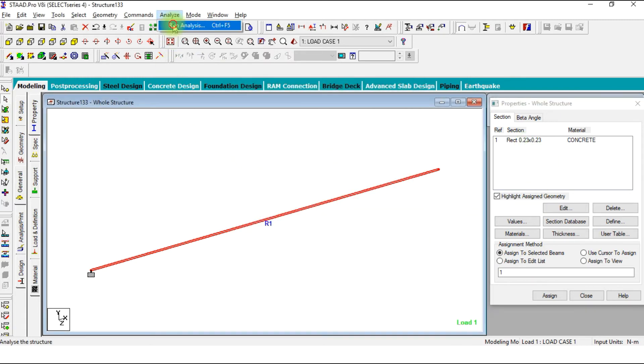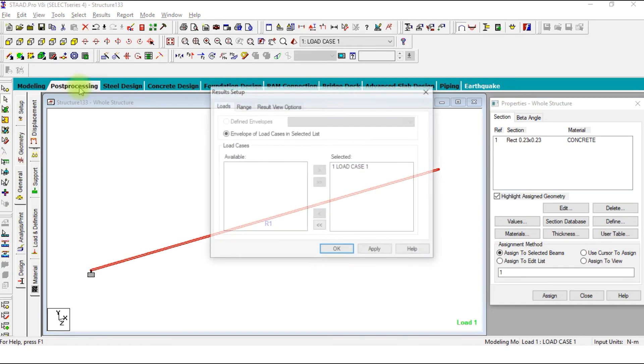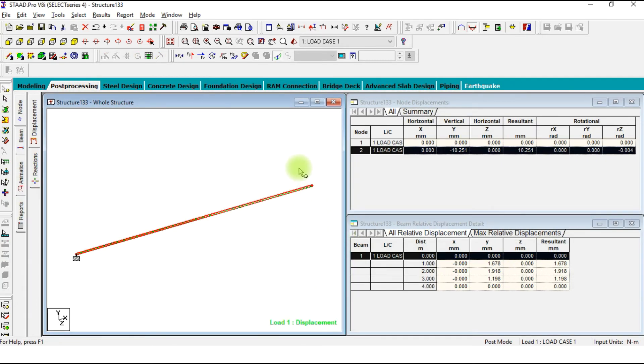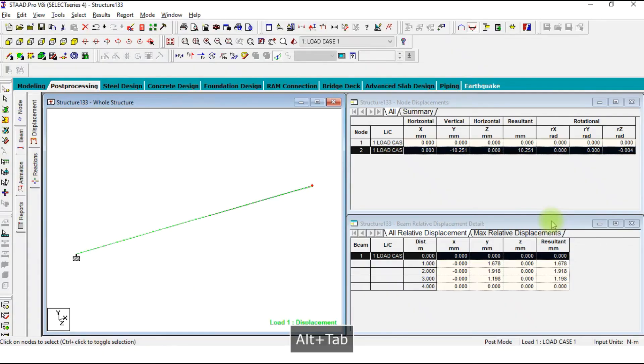Now analyze it, then go to post processing mode. Check the result, it will be 10.251 and the rotation is 0.004. Let's check out in our calculations. The slope is WL squared by 2EI and deflection is WL cubed by 3EI. The slope is 0.00383 and in STAAD Pro 0.004, so it will match. Delta B is 10.22 and in STAAD Pro 10.251. Results are matched now.